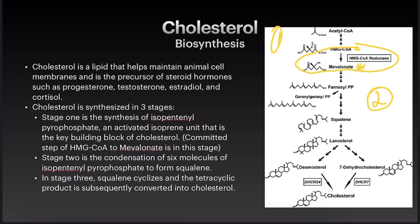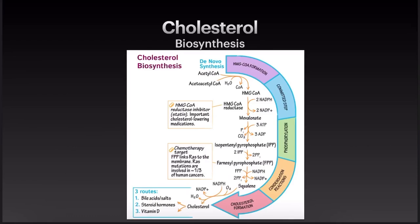Stage two is the condensation of six molecules of isopentanyl pyrophosphate to form squalene, with all those units coming together to build the full backbone. In stage three, squalene cyclizes and the tetracyclic product is subsequently converted into cholesterol. This de novo synthesis uses acetyl-CoA and ultimately produces cholesterol used to make bile acids and salts, steroid hormones, vitamin D, and to keep animal cell membranes together.